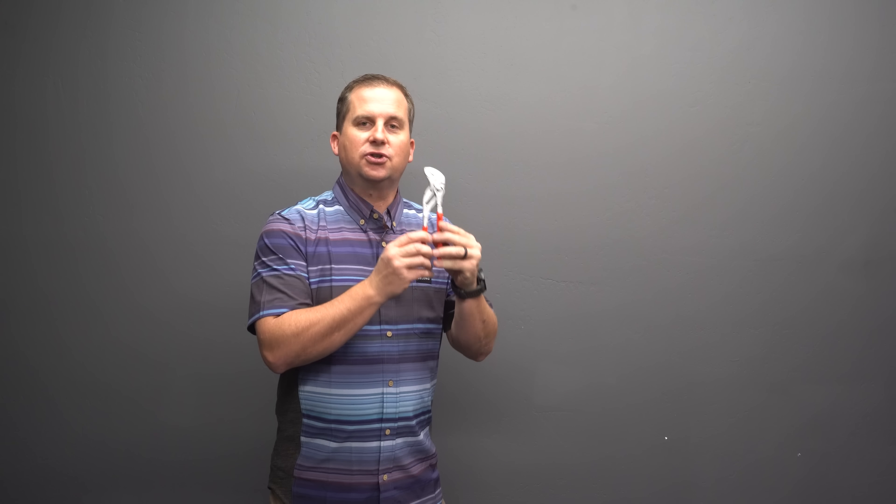Up next are these Knipex pliers. Every single pro mechanic has these and there's a great reason. They're super strong. They're built like a tank. They're expensive and they will outlast you. They look like channel locks, but they're parallel pliers. So these jaws stay parallel no matter what you do.